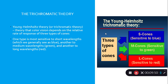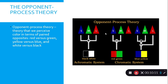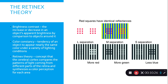The trichromatic theory holds that S-cones respond to blue, M-cones to green, and L-cones to red — each receptive to a specific wavelength. The opponent process theory says we see color in terms of paired opposites: red/green, yellow/blue, and white/black. The retinex theory involves contrast — the increase or decrease in an object's apparent brightness by comparison to surrounding objects — and color constancy, the tendency of an object to appear nearly the same color under varied lighting conditions.